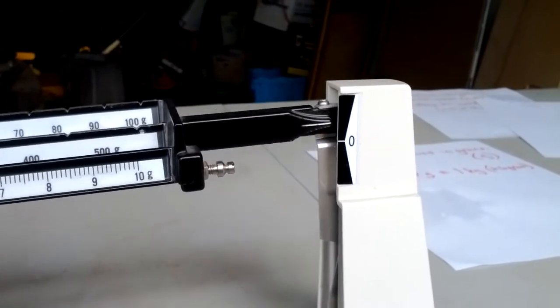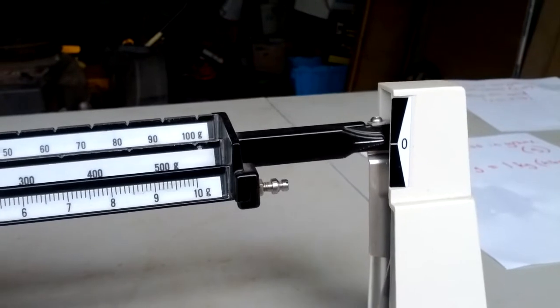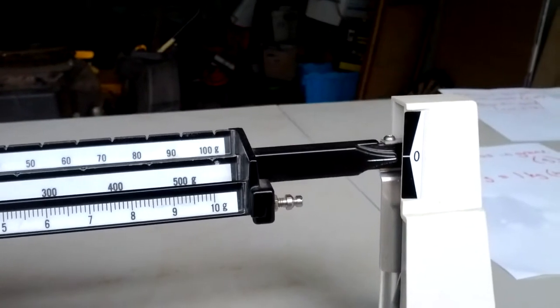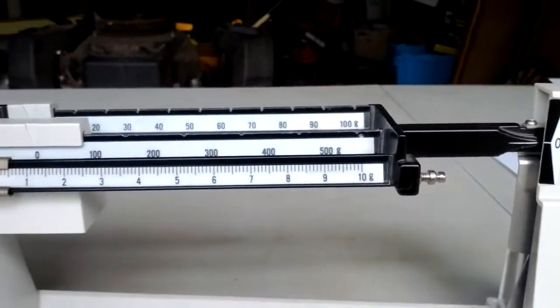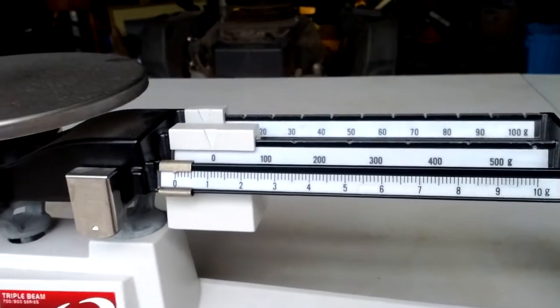And you see if you touch it, it kind of swings back and forth. But once it finishes swinging, it should be right at zero. We don't push on it hard. We don't slam it. We just set things on there easily. That's a triple beam.